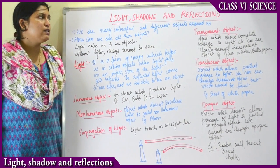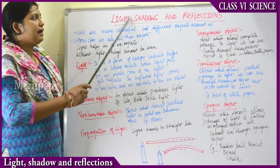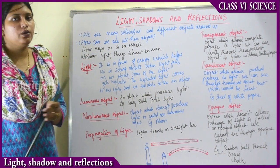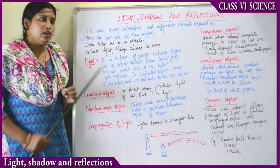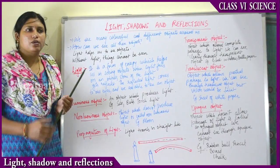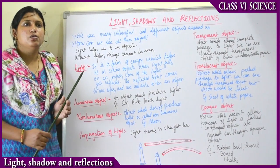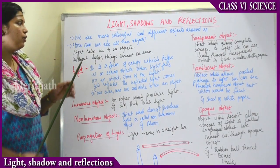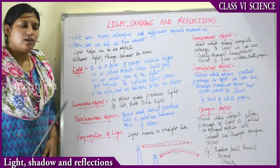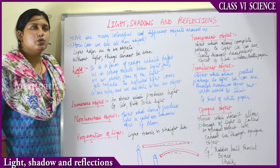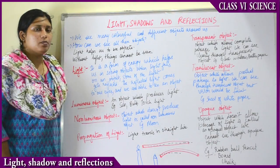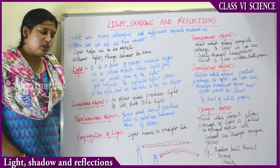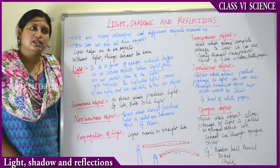The name of the new chapter we will be studying is 'Light, Shadows and Reflection.' Because of the presence of light only, we are able to see the objects around us. There are many colorful as well as different objects around us. On the way to school you see many different types of objects. How are we able to see all these objects? Not only because we have eyes — it's because there is light. Light helps us to see the objects.